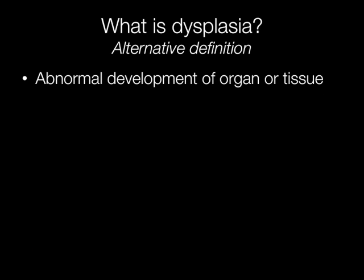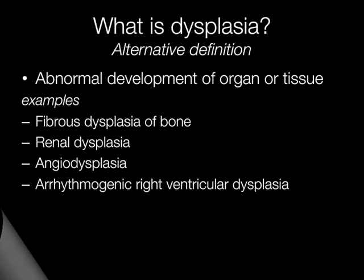To complicate matters, dysplasia has an alternative definition: an abnormal development of an organ or tissue. This is completely different to the type of dysplasia that occurs in epithelium and, importantly, it is not pre-malignant. In this context, dysplasia is a congenital condition, and examples include fibrous dysplasia of the bone, renal dysplasia, angiodysplasia in the right colon, and a potentially fatal condition in the heart called arrhythmogenic right ventricular dysplasia.